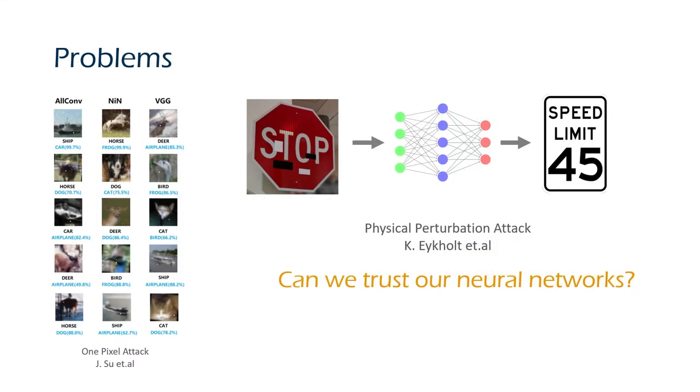With the large-scale application of neural networks, problems have also begun to emerge. Currently, there are many ways to attack neural networks. Modifying a pixel of the image may change the classification results of the neural network with high confidence.